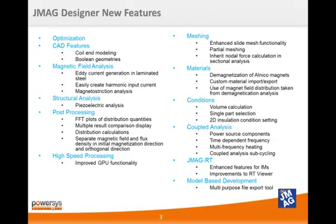Once you've generated results, a number of new features will help you with post-processing. JMeg can now perform FFT analyses of distribution quantities, compare multiple results in a single display, perform statistical analyses on distribution plots, and separate magnetic field and flux density based on the initial magnetization direction. The GPU processing algorithm has also been improved to help reduce analysis time. On the meshing side, JMeg version 12 has improved the slide mesh generator for non-uniform air gap geometries and added a partial meshing tool.